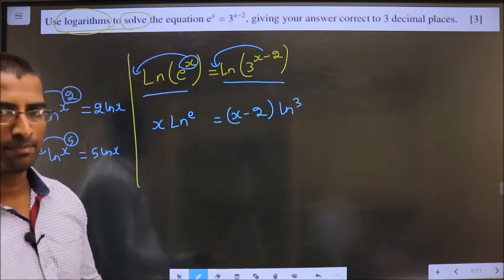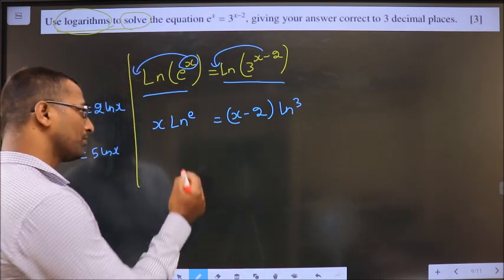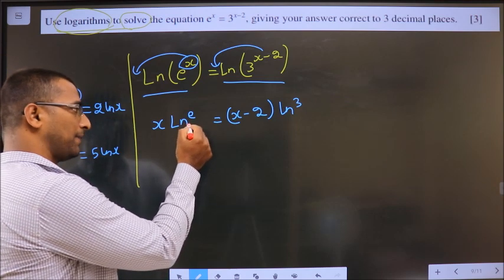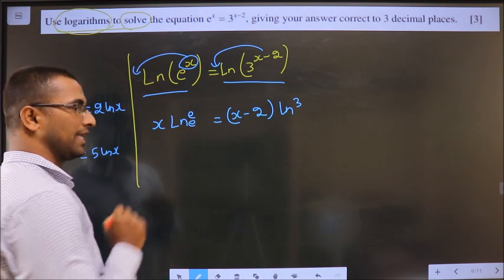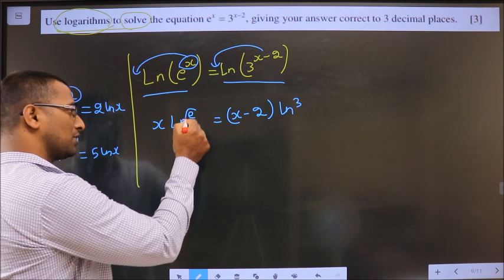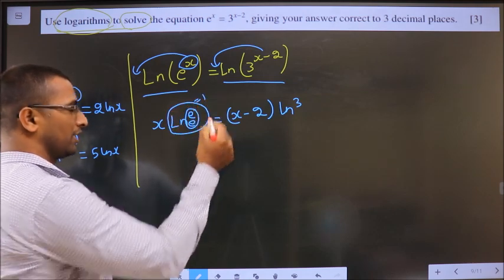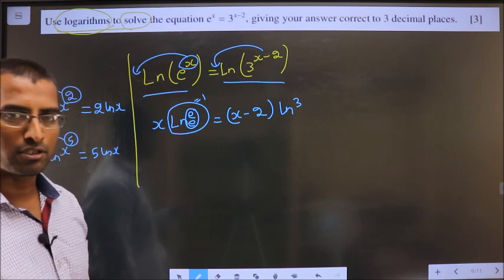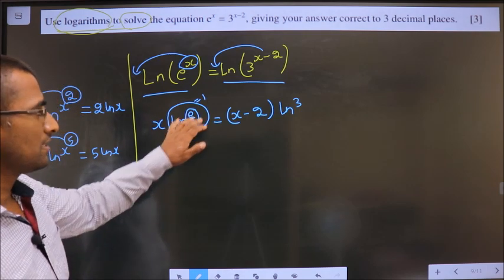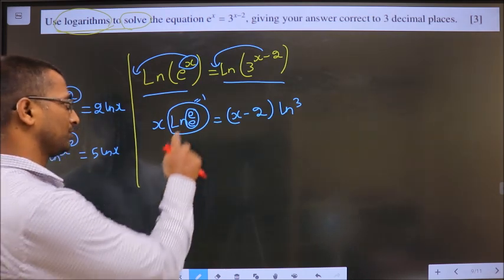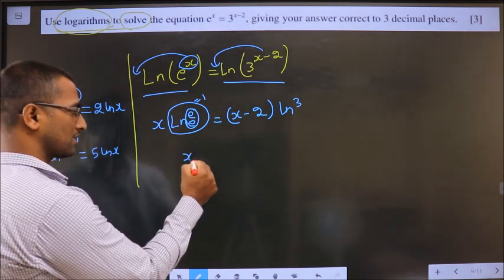Now how do we simplify? See. For natural logarithm, base is not given. So it means e. When these two are same, this will result in 1. Even if you can, you can also place it in calculator and check. This result is 1. 1 into x is x.